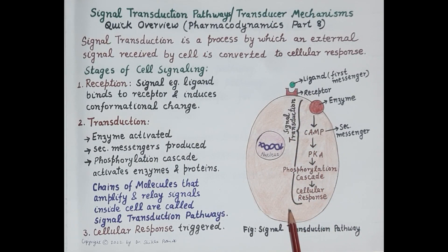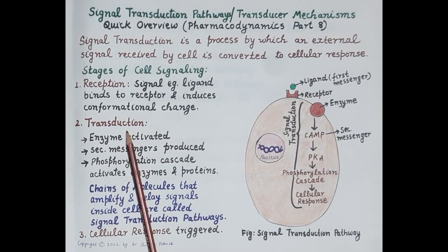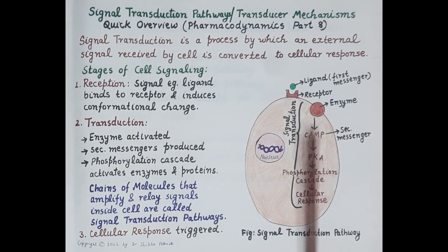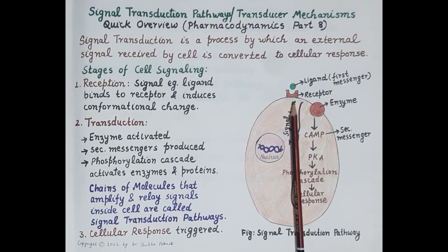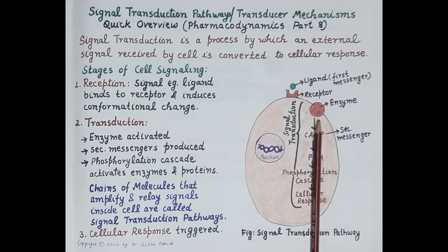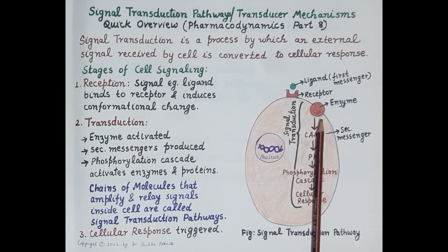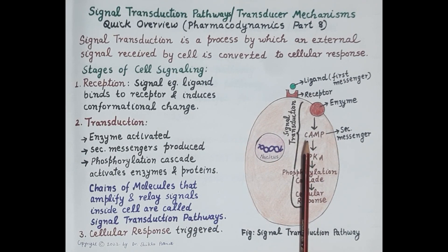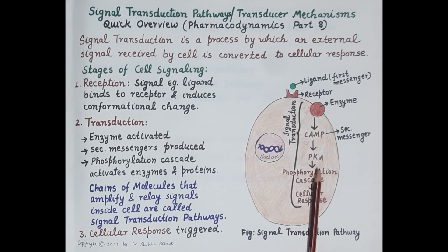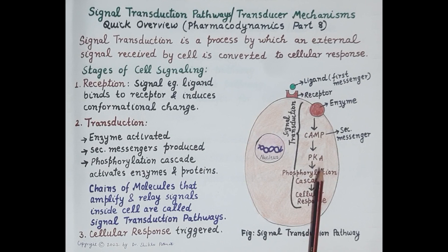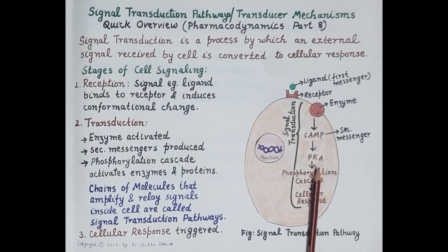In the transduction mechanism, in the majority of cases the activated receptor activates an enzyme located in the cell membrane — for example, adenyl cyclase. This activated enzyme mediates release of a second messenger, for example cyclic AMP (cyclic adenosine monophosphate), in the cell. Cyclic AMP further activates an enzyme called protein kinase A (PKA).